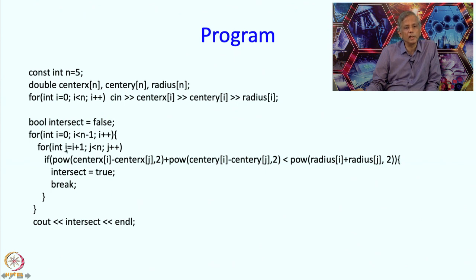Now corresponding to every i, j is going to take values from i plus 1 to n-1. And therefore these parameters have been set in this manner. And of course in each iteration, at the end of the iteration I am going to increment j. And what do I do in each iteration? In each iteration I have to check whether disk i and disk j are intersecting.